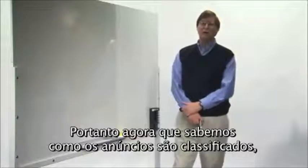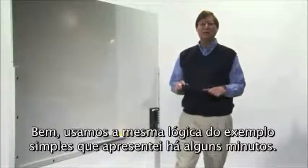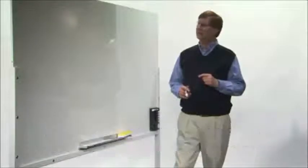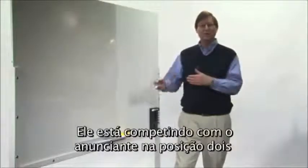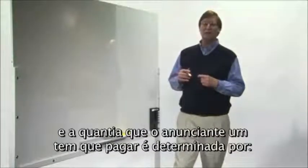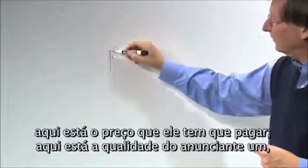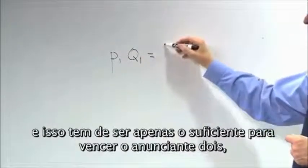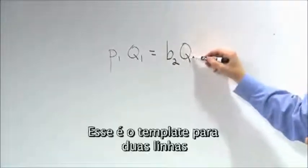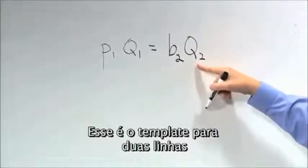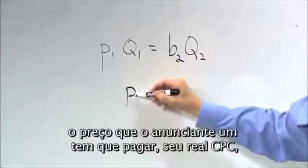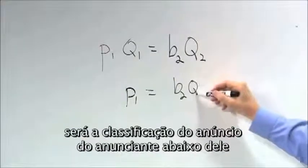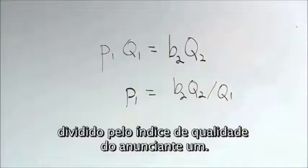Now we know how the ads are ranked — but how much do you actually pay for a click? We use the same logic as in the simple example: you pay the minimum amount necessary to retain your position. So think of the advertiser in position 1 competing with the advertiser in position 2. The price advertiser 1 has to pay, given his quality Q1, is just enough to beat advertiser 2 who bids B2 and has quality Q2. If you solve that equation, the actual CPC that advertiser 1 has to pay is the ad rank of the advertiser below him divided by the quality score of advertiser 1.